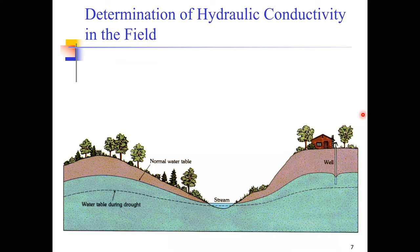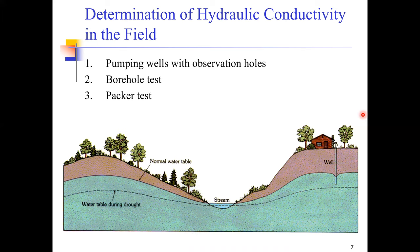Now let's talk about how to determine hydraulic conductivity in the field. Three different methods are used: pumping wells with observation holes, borehole tests, and the packer test. The borehole test is similar to the constant head and falling head permeability tests studied in the previous lecture, except those were performed in the laboratory — they can equally be performed in the field by drilling a borehole and either keeping the head constant or letting the water level fall. The packer test is generally performed for rocks.